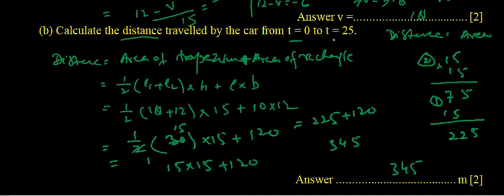So 345 meters is the distance traveled during t=0 to t=25. If you feel any problem, you may write in comment and I will reply, inshallah.